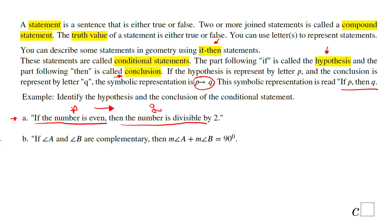For part B, we have: if angle A and B are complementary, that is the hypothesis P, then the measure of angle A plus the measure of angle B equals 90 degrees — that is the conclusion Q.